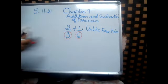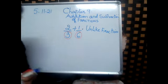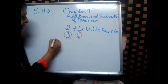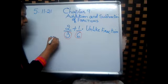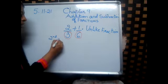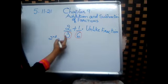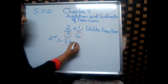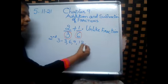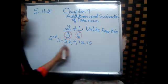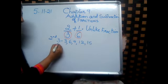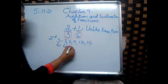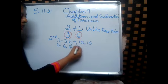Now, this is the first step — you find that the denominators are different. The second step is write all the multiples of the denominator 3. They are 3, 6, 9, 12, 15. Let us also write the multiples of 6: 6, 12, 18.